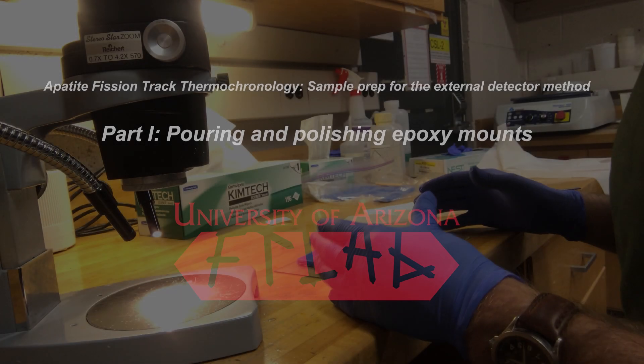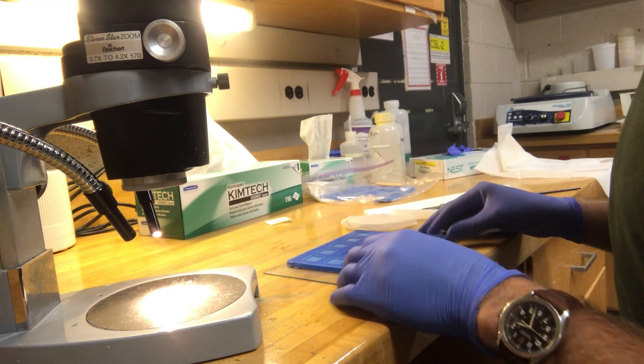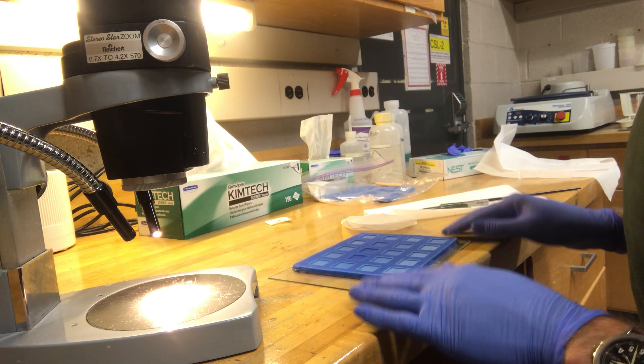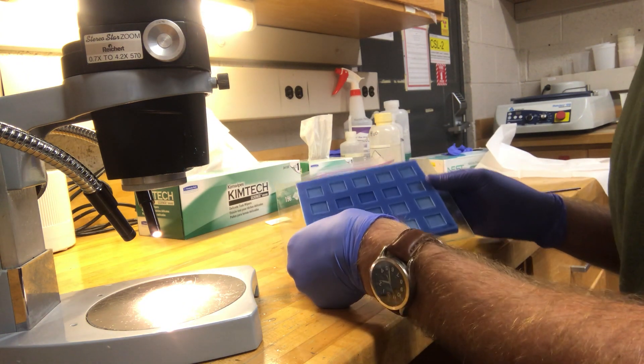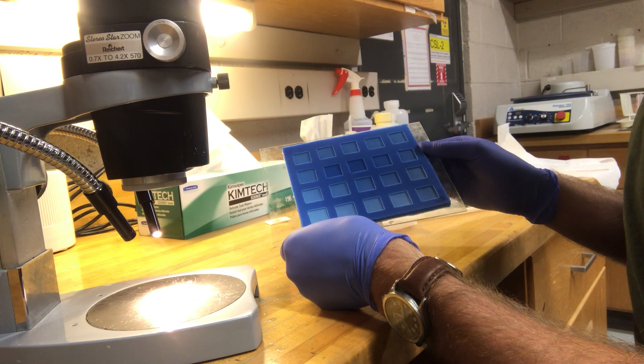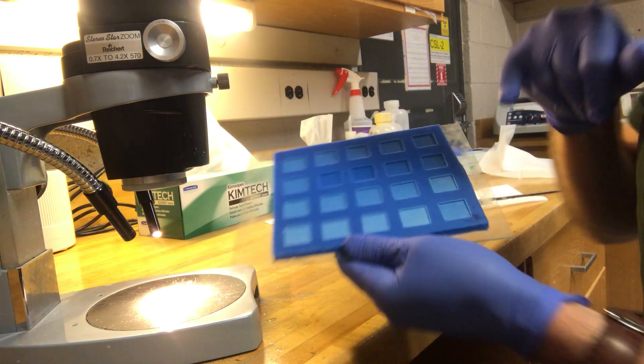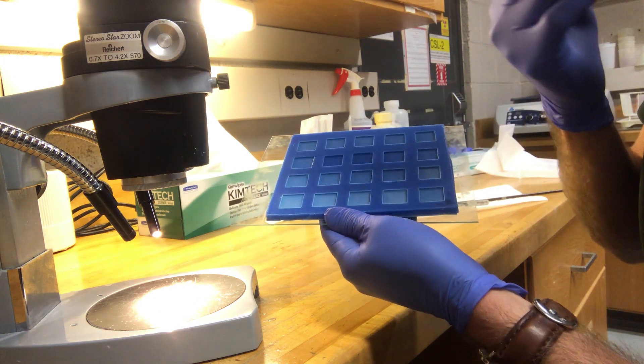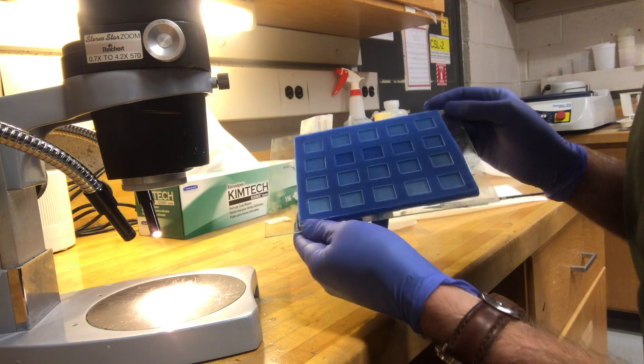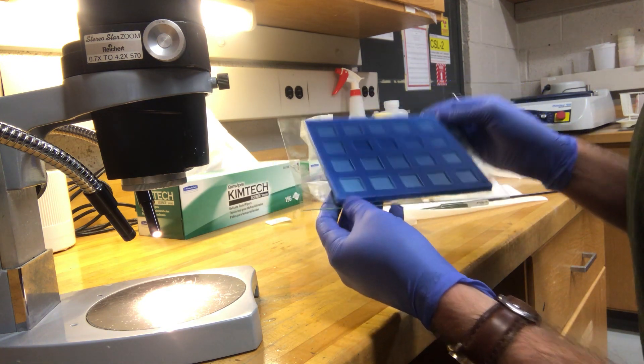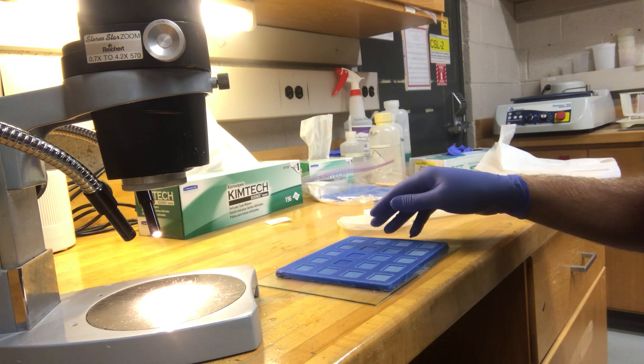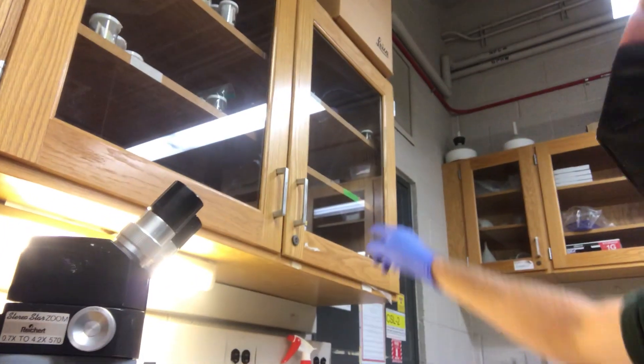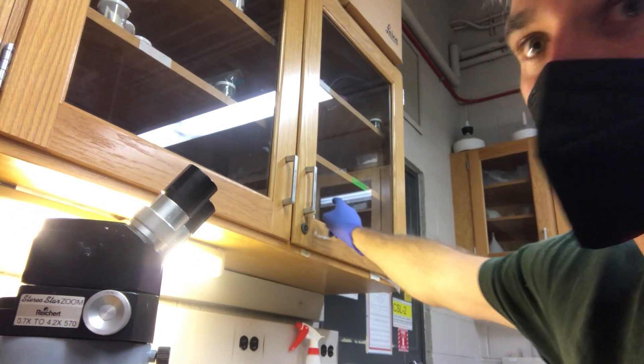Currently I'm just going to show you how to mount your apatites for EDM analysis. The first thing you do is get one of these lovely little epoxy molds made out of rubber. You'll see that some of the molds might be a little white, which means they're pretty worn out and we want to avoid them. There is epoxy and epoxy molds that live up here in this corner cabinet.